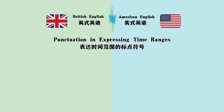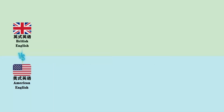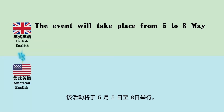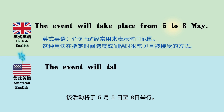Punctuation in expressing time ranges: the 'to' preposition versus hyphen. 'The event will take place from 5 to 8 May' versus 'The event will take place on 5–8 May.'